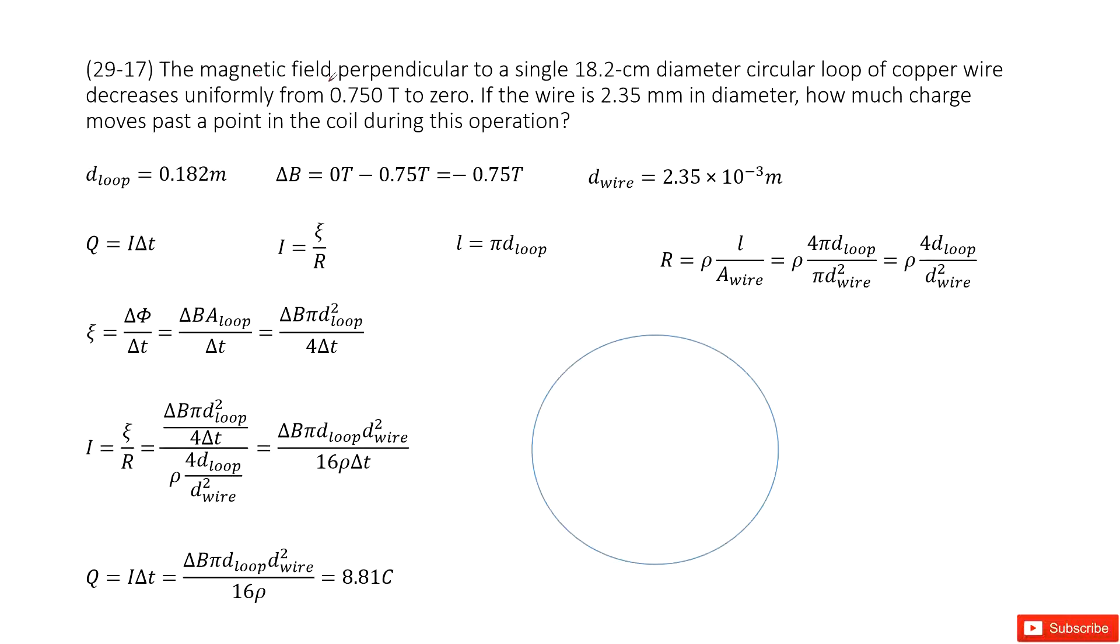Chapter 29 is about electromagnetic induction and Faraday's law. You can see the magnetic field is perpendicular to a single loop of copper wire. This magnetic field changes from 0.75 Tesla to 0. So you can use the final 0 minus initial 0.75 to get the answer.